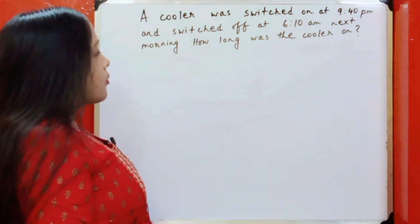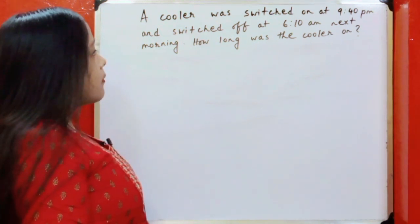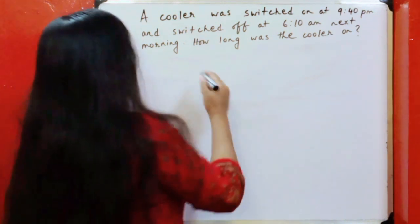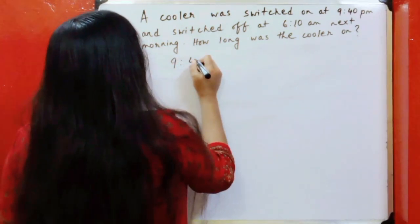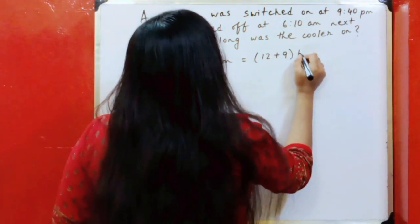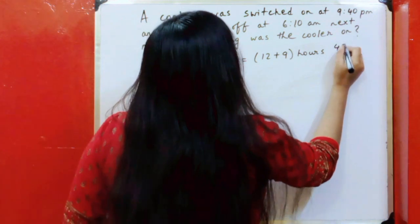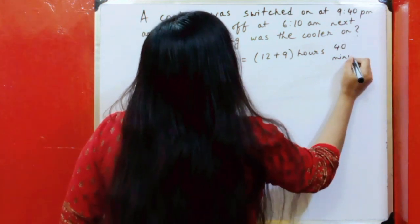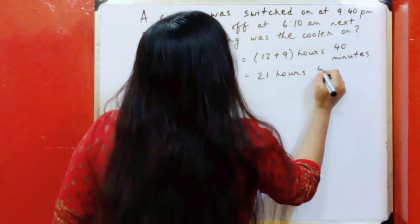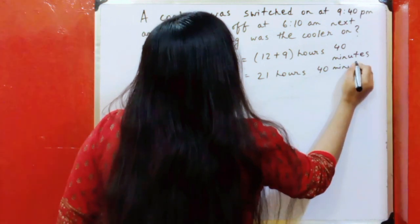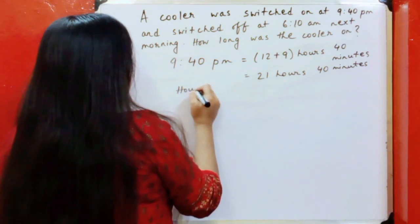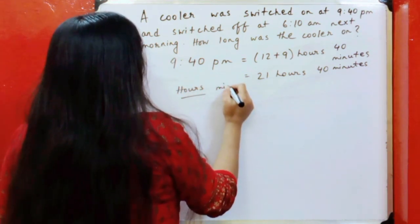A cooler was switched on at 9:40 PM and switched off at 6:10 AM the next morning. How long was the cooler on? 9:40 PM is 12 plus 9 hours 40 minutes, so it is 21 hours 40 minutes. There will be two parts to this sum — one part we have to subtract, and another part we have to add.